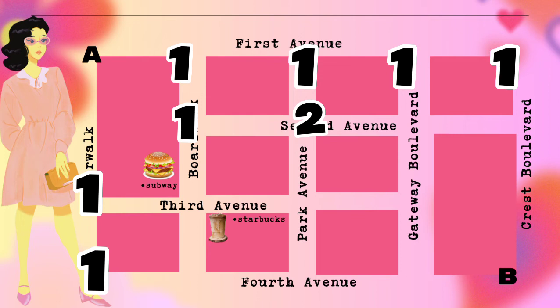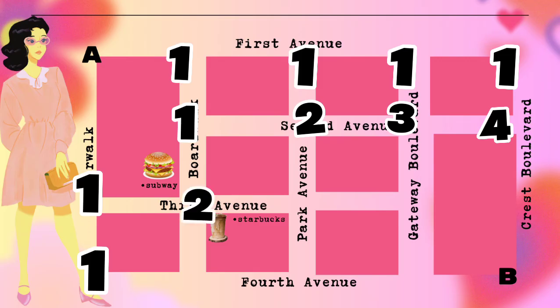The number two we got from adding one and one, we propagate to the corner of First Avenue and Gateway Boulevard: one plus two equals three. Then the number three from adding one and two is propagated to the other one at the corner of Crease Boulevard: three plus one equals four. Bringing down the one to the corner of River Walk: one plus one equals two, and two plus two equals four.